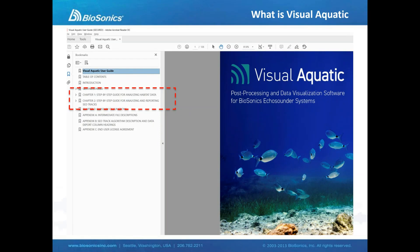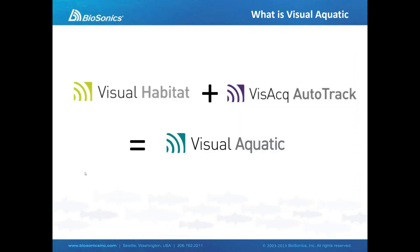A look at the table of contents for the user guide really provides a good assessment of what the software is comprised of. Chapter one is a step-by-step guide for analyzing habitat data, and chapter two is a step-by-step guide for analyzing and reporting SED tracks — these are fish tracks. So we've got habitat data and fisheries data combined in a single post-processing software program. We combined all the tools from Visual Habitat and Vizac AutoTrack into the new program, Visual Aquatic.